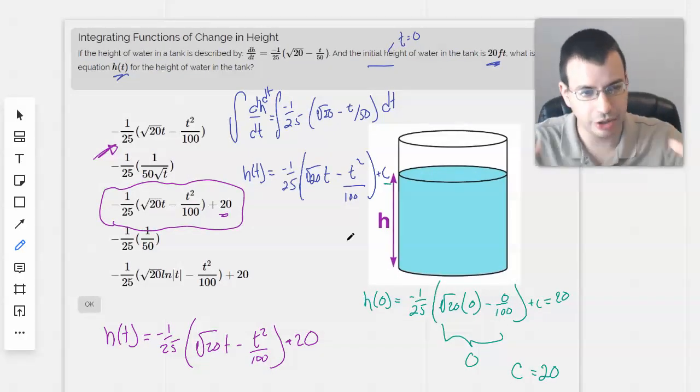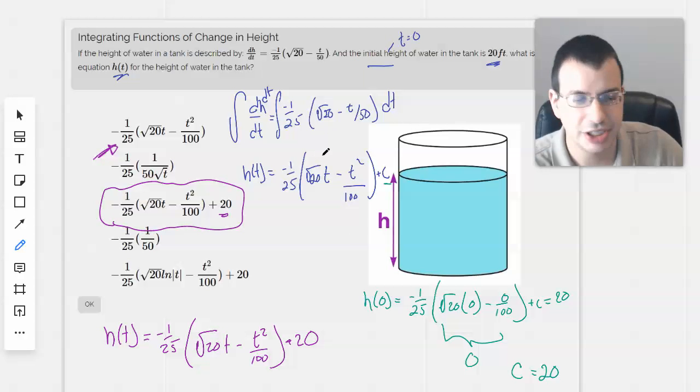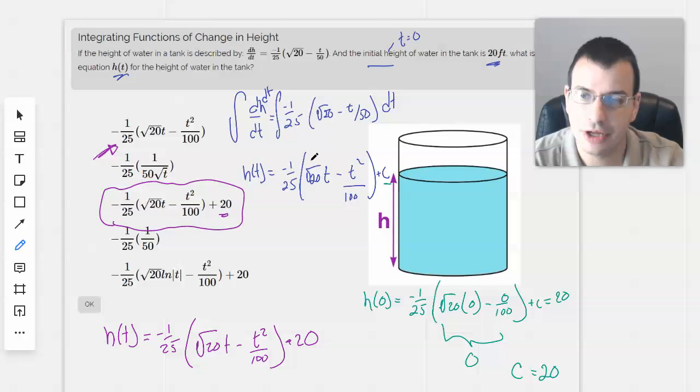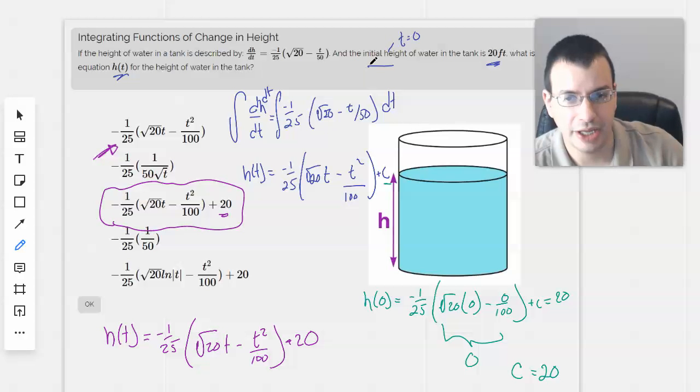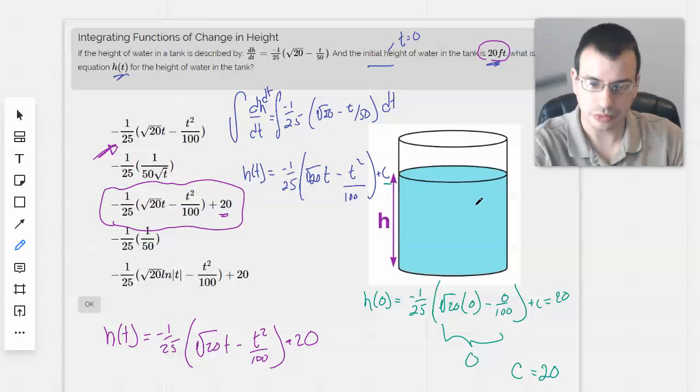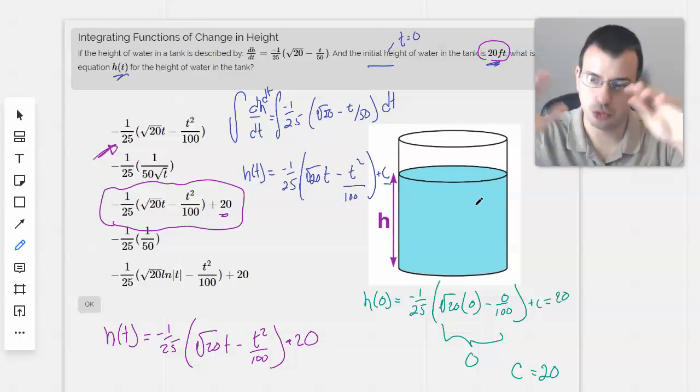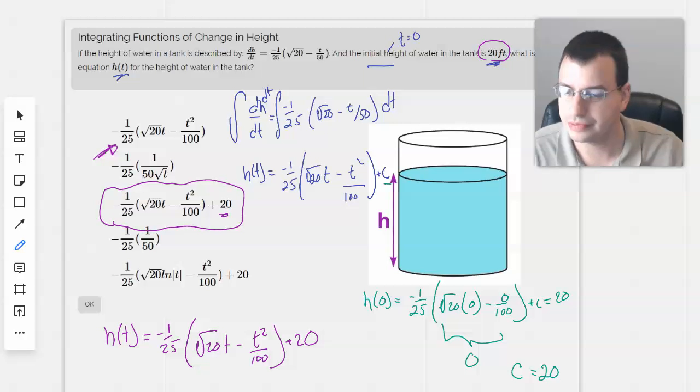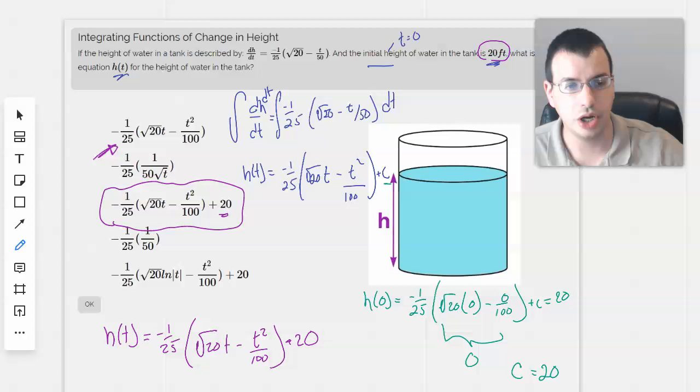So going back, looking at what we did, we're given dH/dt, and we're asked to find H(t). We take the integral of dH/dt to get height with respect to time, but we're left with a constant, the constant C, and we use the initial condition, i.e. the initial height at T equals 0, where T equals 0 is 20 feet. Plug that into our equation, solve for C, rewrite our equation without the C because we now know what C is, and that's our answer. Sounds good? See you on the next problem. Let's go.